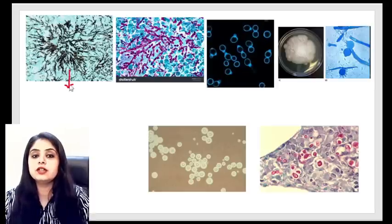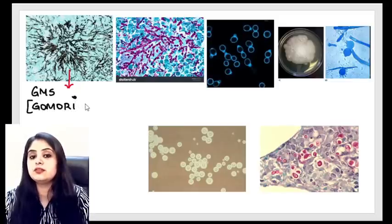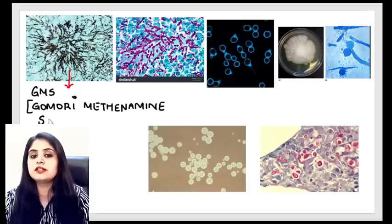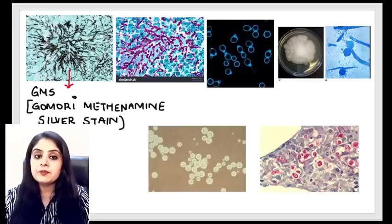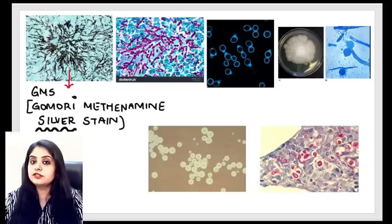The answer to this question is lactophenol cotton blue. Now let's look at the different stains. The first one shows all fungal hyphae turned black — this is the GMS stain, which stands for Gomori methenamine silver stain. The trick to remember: whenever a stain has the word 'silver' in it, it will give a blackish color because silver turns black.